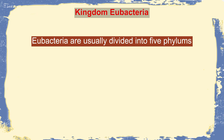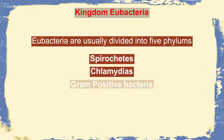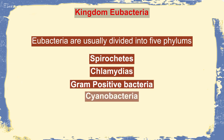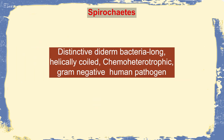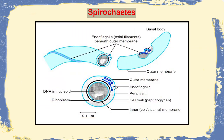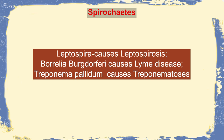Eubacteria can be broadly divided into five phyla: Spirochetes, Chlamydia, Gram-positive bacteria, Cyanobacteria, and Proteobacteria. Spirochetes are distinctive diderm bacteria — long, helically coiled, chemo-heterotrophic, Gram-negative human pathogens. They are special because they have axial filaments, also called endoflagella. They are responsible for causing diseases like leptospirosis, Lyme disease, and treponematosis.